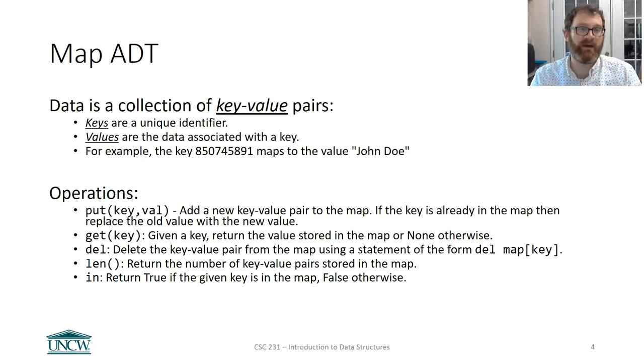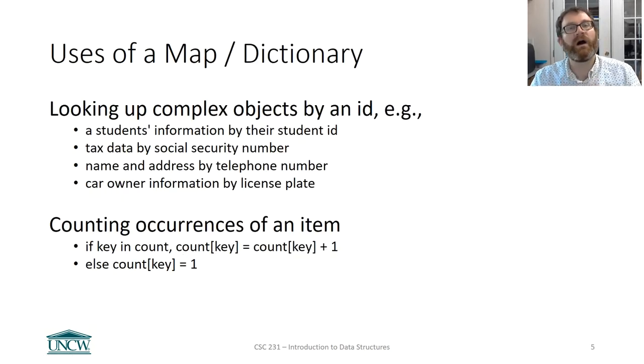So what do you need to know about maps? They're a collection of key value pairs where keys are unique identifiers. You can only have one unique key. Values are associated with the key. You can put things in a map, you can get things out of a map, you can delete things from a map, you can get its size, and you can test if things are in the map. So these are the things that you need to know how to do with a map or a dictionary.